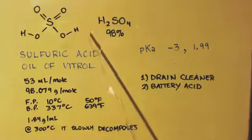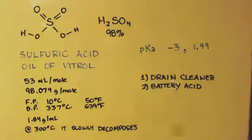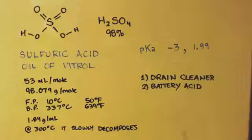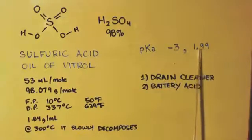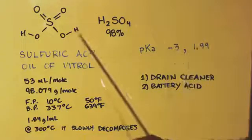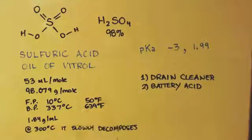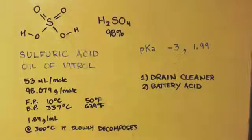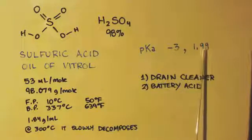A strong acid is generally considered anything with a pKa of minus 2 or below. Sulfuric acid has a pKa of minus 3 on the first hydrogen — it is diprotic, two hydrogens. The second hydrogen has a pKa of about 1.99, which is not strongly acidic — it's a medium acid. Once that first hydrogen comes off and it becomes bisulfate, that bisulfate is only a medium acid, not a strong acid at all.